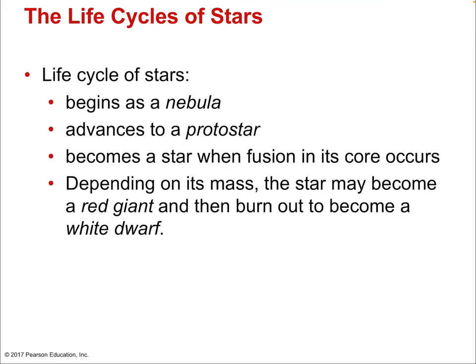The life cycle of stars begins with a nebula collapsing to form a spinning disk of matter. The densest part becomes the protostar. It becomes a star when fusion begins in its core — always hydrogen-to-helium fusion for main sequence stars. This process takes tens of millions to billions of years depending on the nebula's initial size. Hydrogen-to-helium fusion continues for most of a star's lifespan.